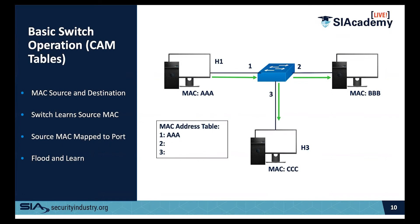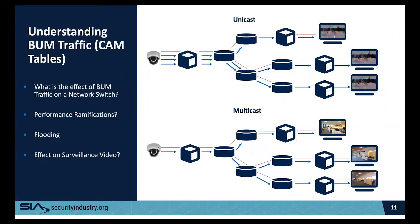So what can go wrong in this type of environment? There's something called BUM traffic. BUM stands for Broadcast, Unknown, and Multicast — the three types of traffic that traverse your network that cannot be commonly mapped back to a CAM table, so their only action is to flood out to all ports.